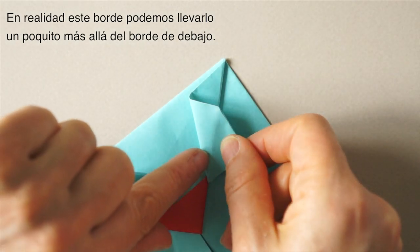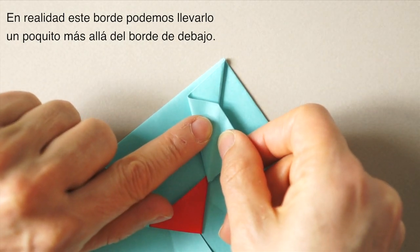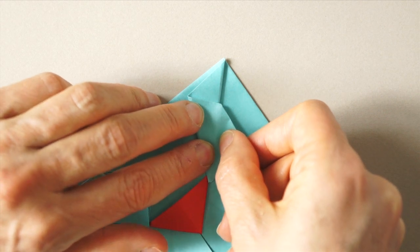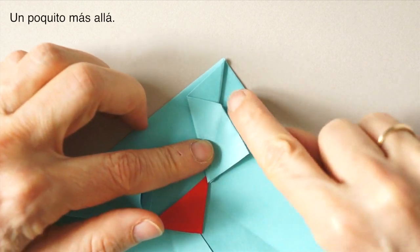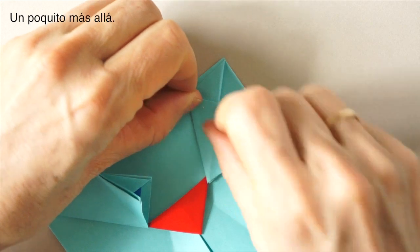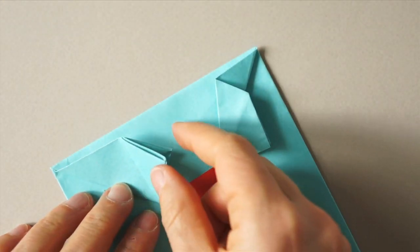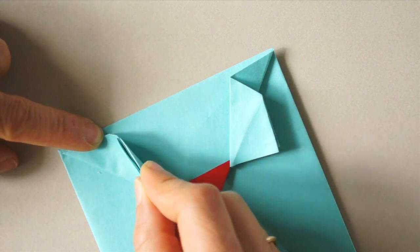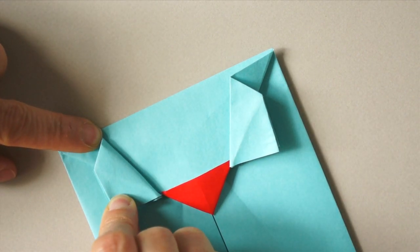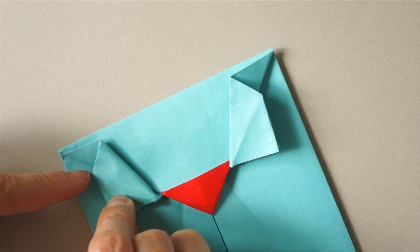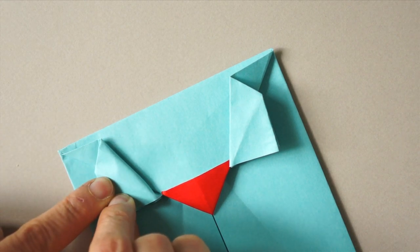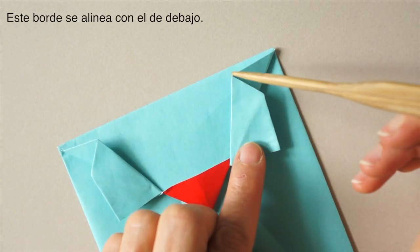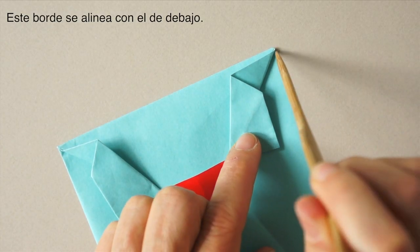Actually, this can go a little beyond to allow for the thickness of the paper. Just a tad more. Same here. Just a little bit more. Now this edge will align here.